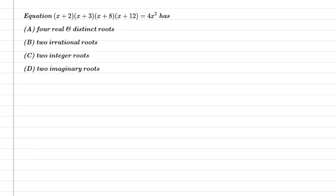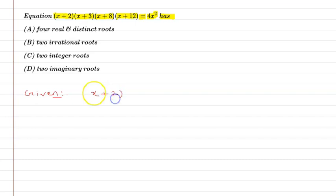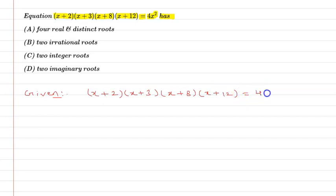Hello students, first of all let us understand the question. The question is the equation (x+2)(x+3)(x+8)(x+12) is equal to 4x squared. So let's start.